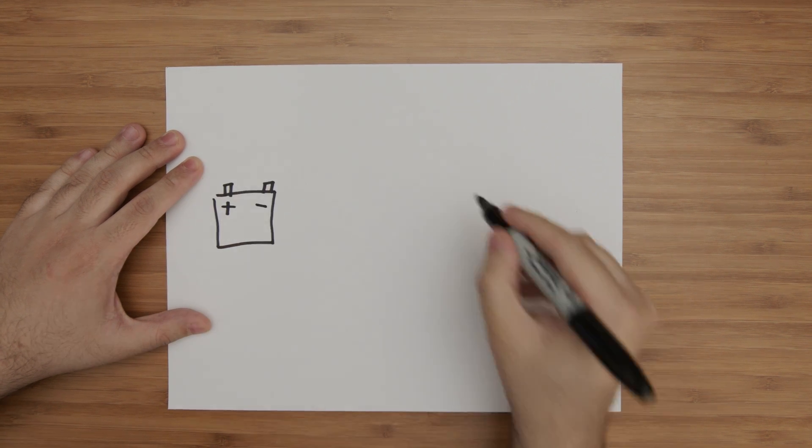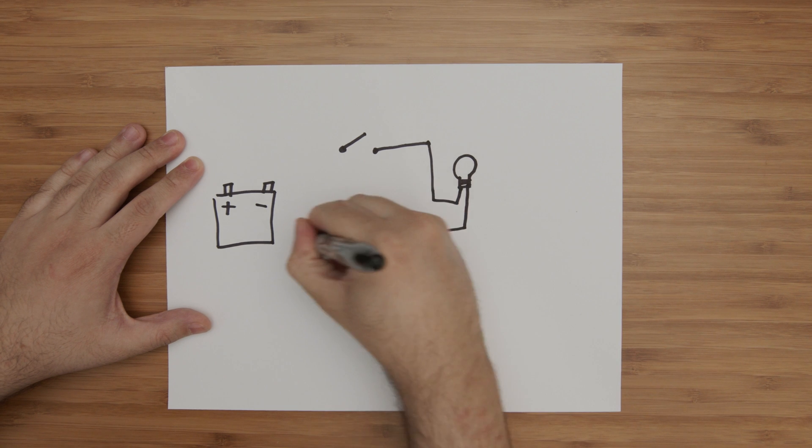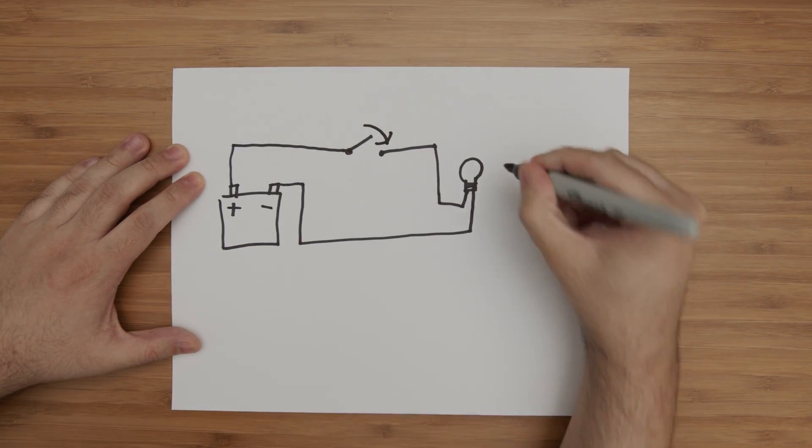We were all shown this diagram in school. We have a power source connected to a lightbulb through a switch. And then we were asked what happens when we close the switch.